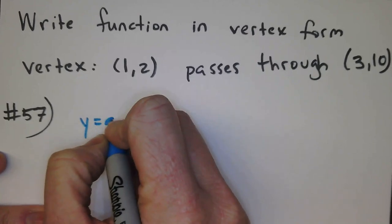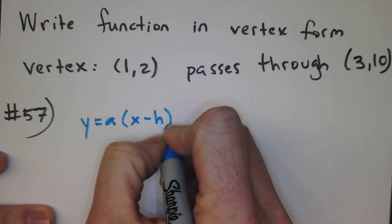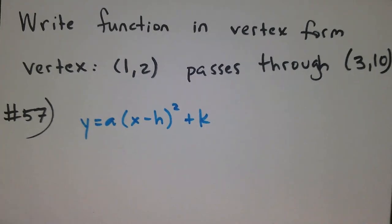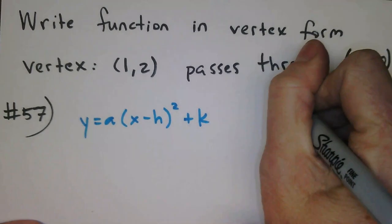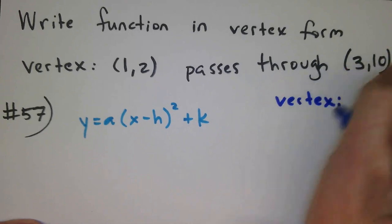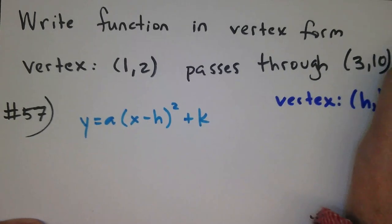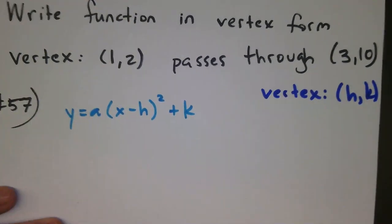So vertex form is this guy, y equals a times x minus h, quantity squared, plus k. The vertex specifically is h, k. So if they tell us the vertex is 1, 2,